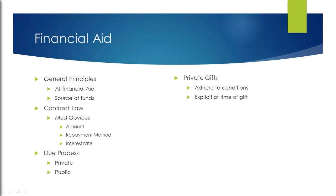When it comes to private gifts, there are specific conditions they must adhere to, and those conditions must be explicit at the time of the gift. So if a private donor wants to give $5,000 for specific scholarships, they can't give the money and then come back later and say that wasn't how they intended it to be spent. They need to be very explicit at the time, and the institution must adhere to the conditions laid out for the gift.